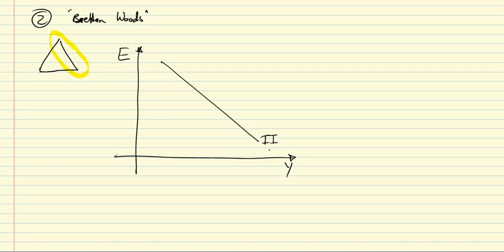Why is the internal balance curve downward sloping? The curve shows all combinations of exchange rates and income corresponding to full employment and price stability. A lower, more depreciated exchange rate implies a lower current account, which implies lower income, so it must be offset by higher domestic spending to maintain full employment. Hence the negative slope between exchange rate and income.